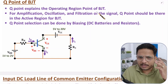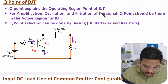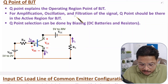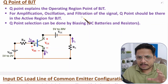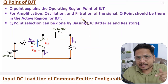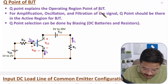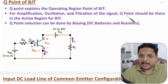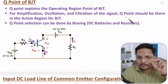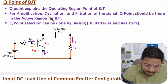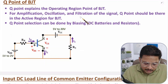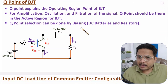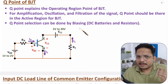With BJT we can have many applications. We can use BJT as an amplifier, as an oscillator, or as a filter. When you use BJT as an amplifier, oscillator, or filter, you will be using BJT in the active region only. So the Q point should be in the active region. Q point selection is done with the use of biasing, and in biasing we use DC batteries and resistors.